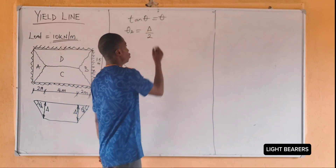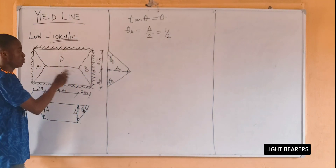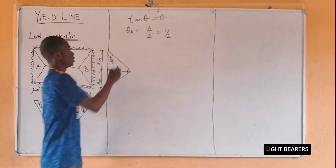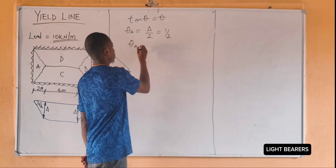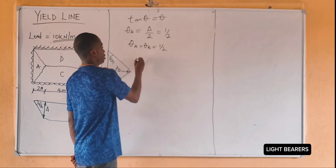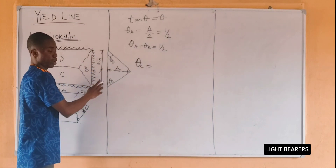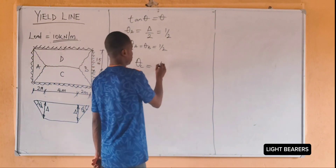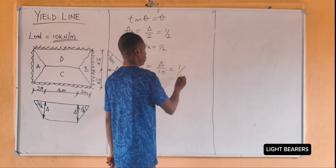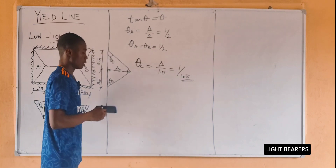Setting delta equal to 1, theta A equals delta over 2, which gives 1 over 2. Since panel A and panel B are symmetrical, theta A equals theta B. Now let's find theta C: theta C equals delta over 1.5, so with delta equal to 1 we have 1 over 1.5.